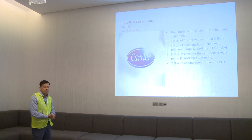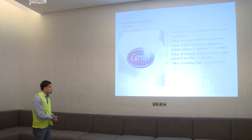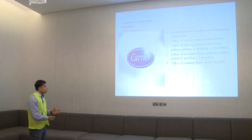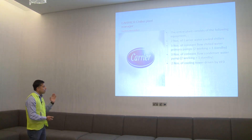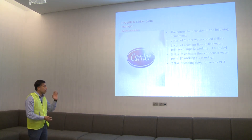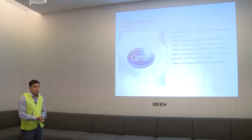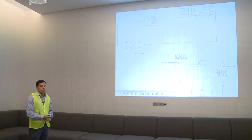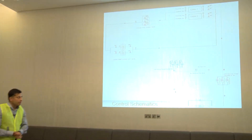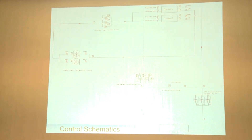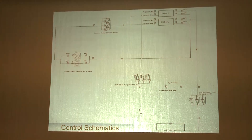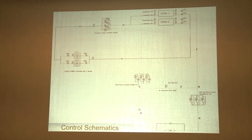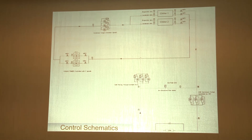We have two water-cooled chillers, three constant-volume primary pumps, and three constant-volume condenser pumps — two working, one standby. Primary pumps are also two working, one standby. And two cooling towers. These are the equipment we are going to control from the Chiller Plant Manager. All the equipment in the cooling system is controlled by our Plant Manager.